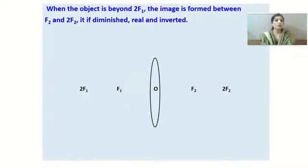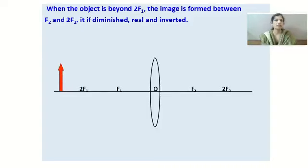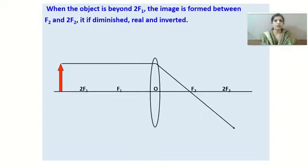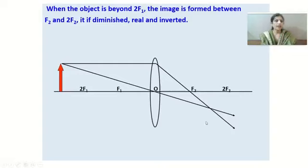When the object is beyond 2F₁: applying the rules, the first ray parallel to the principal axis after refraction passes through F₂; the second ray through the optical center goes undeviated. These two rays meet at one point. The image is formed between F₂ and 2F₂, and the image is diminished, real, and inverted.